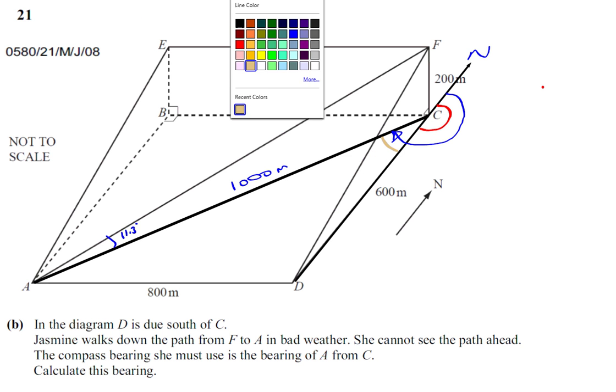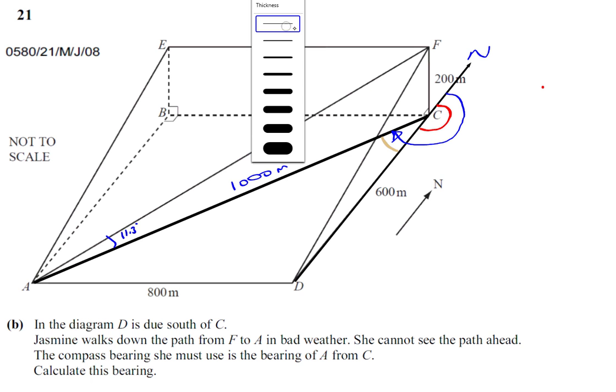I can call it angle Y. So what I've got to do is find angle Y. Now we know that this base, ABCD, is a rectangle. So this is a right angle in the corner here.